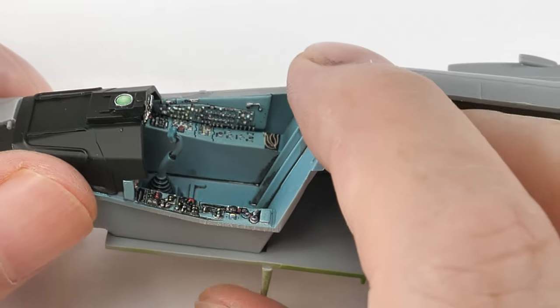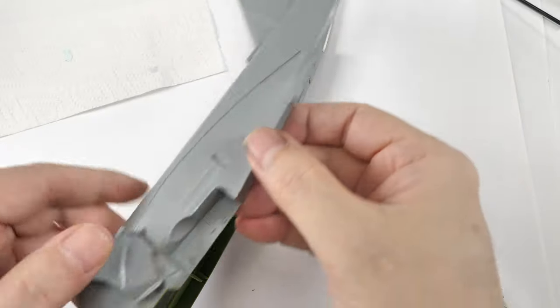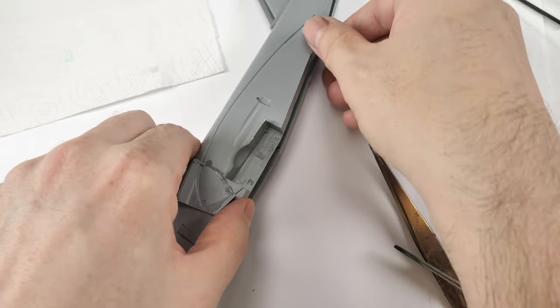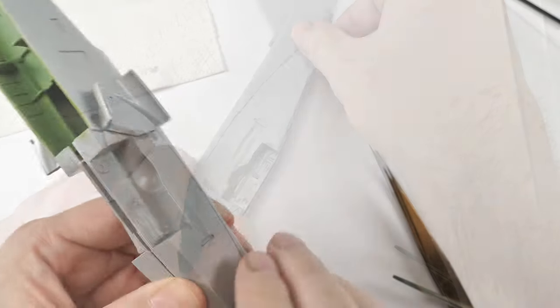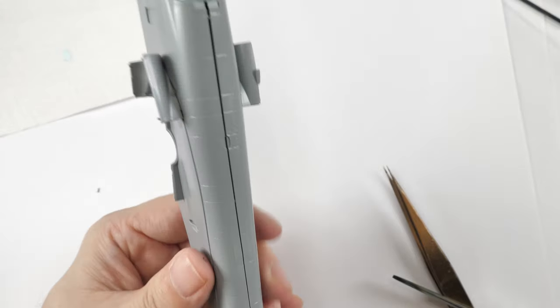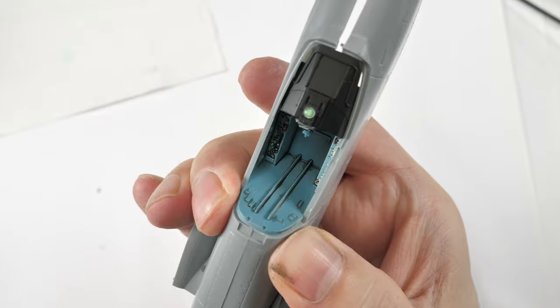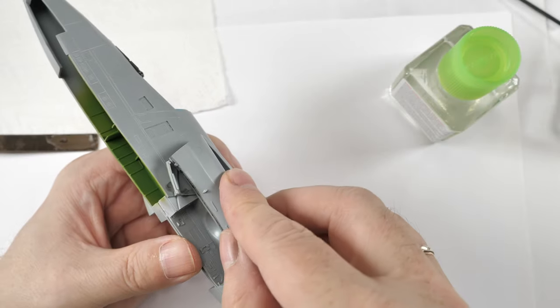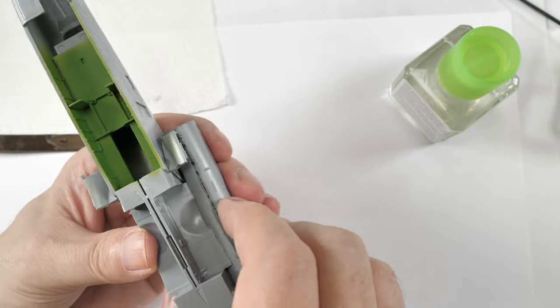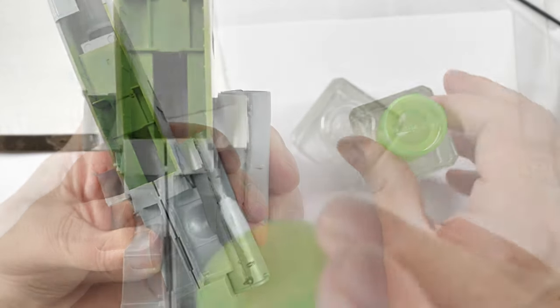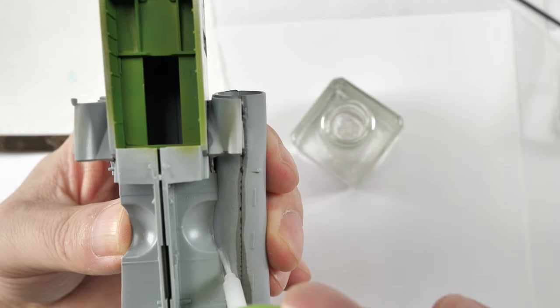Now this cockpit tub fits onto the floor of the front landing gear. And then it's time to assemble the fuselage halves. This joint is really quite easy, straightforward to do. But at the same time as well, we start building up the side trunking for those engines.